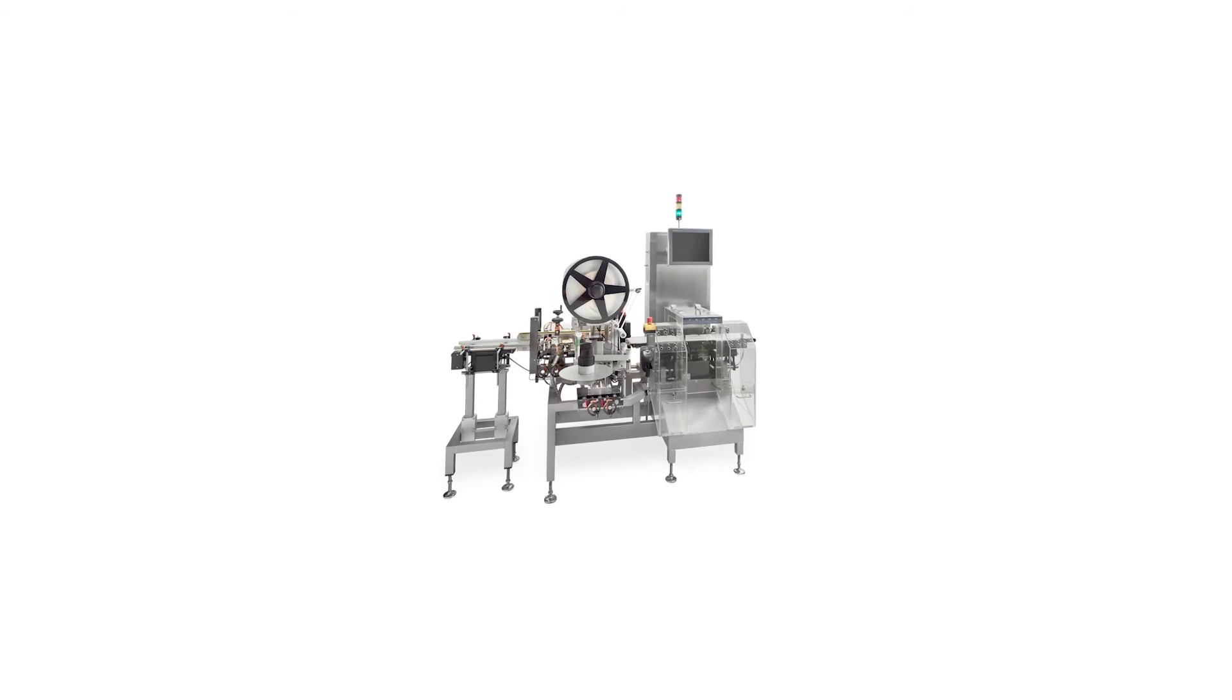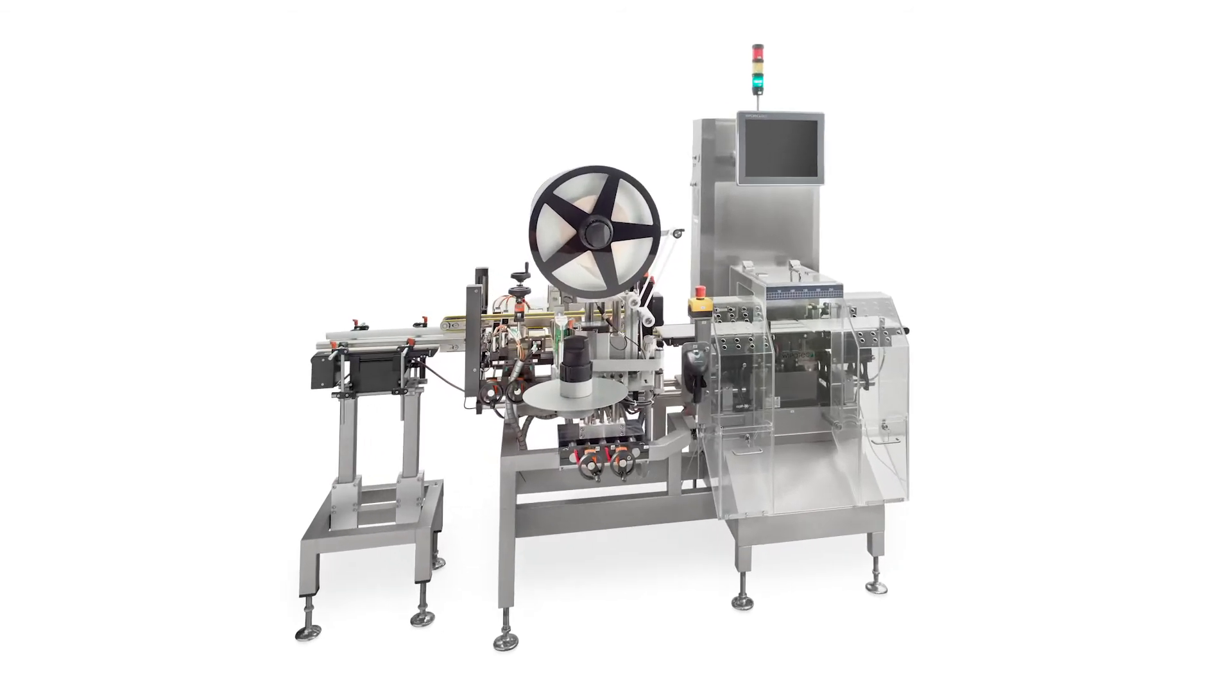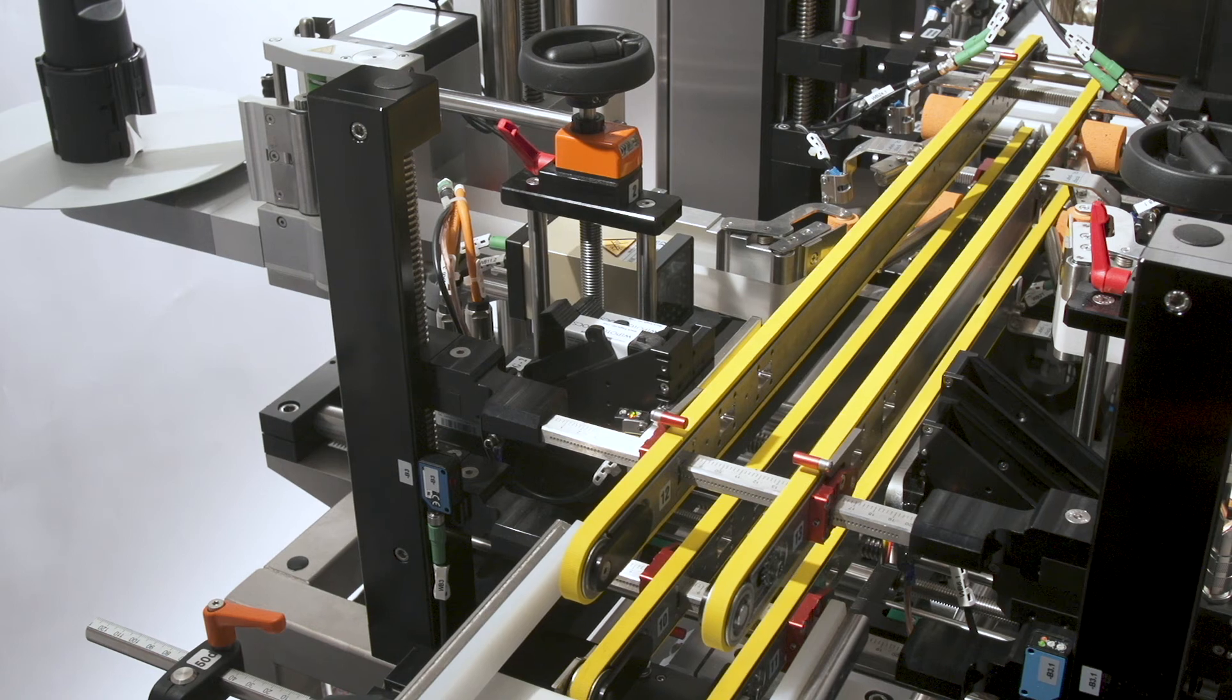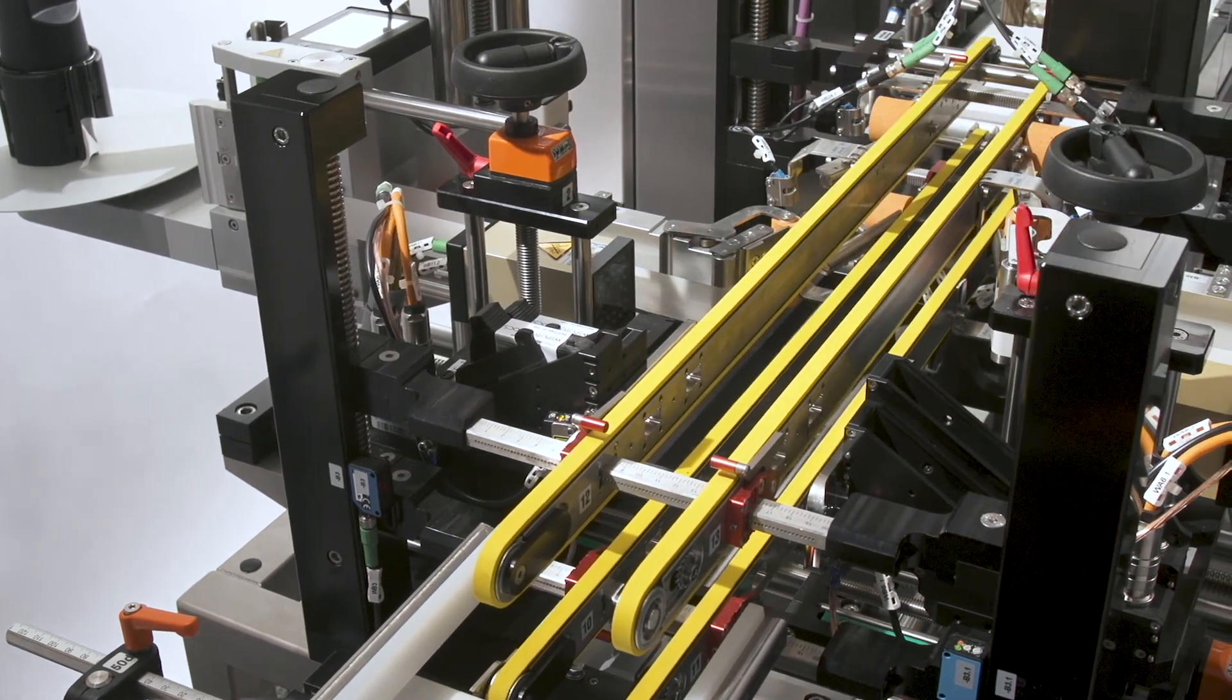After the product is packaged, the product will go through a series of four steps to complete the full serialization using the TQS-HCA-TE machine. Starting at the beginning of the machine, the product will go through a set of side pressing belts to ensure the product is in the correct position before the printer places the serialization code onto the product.